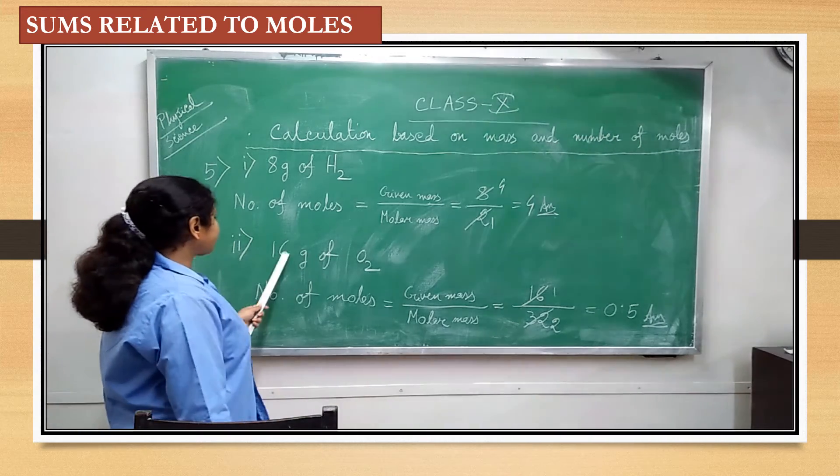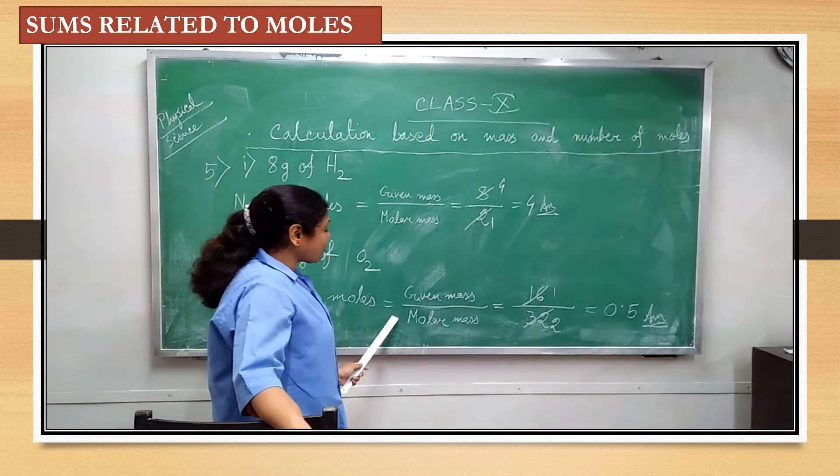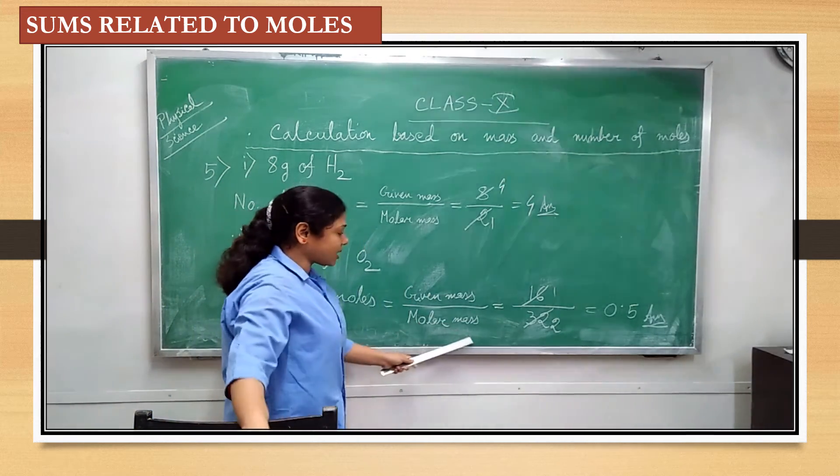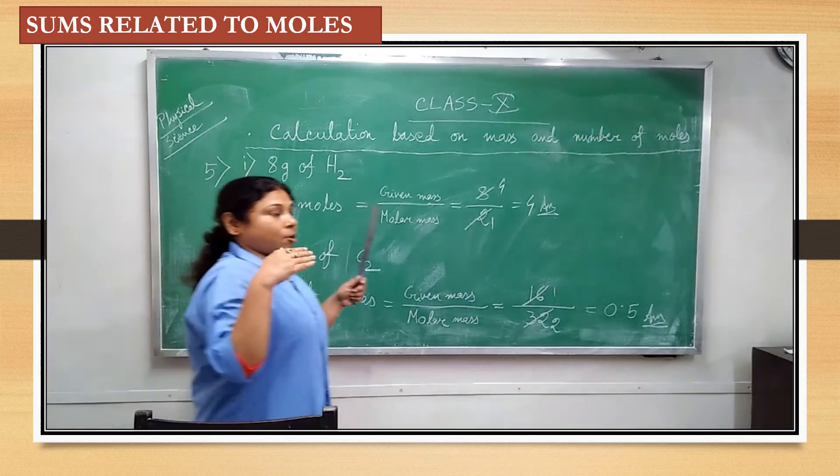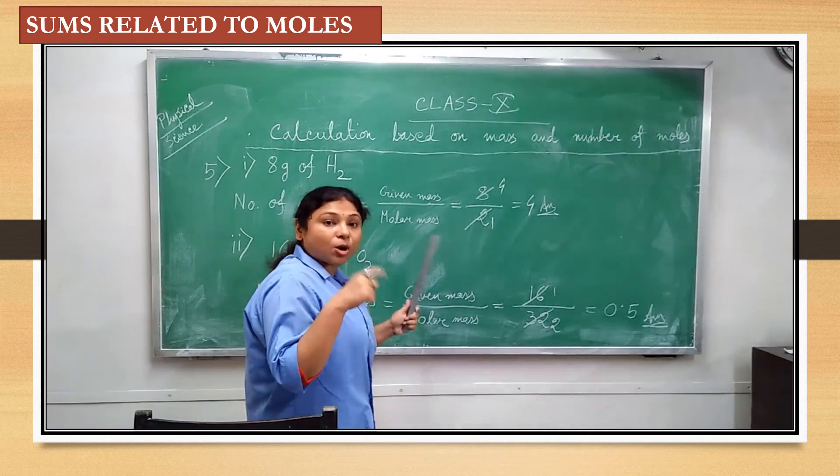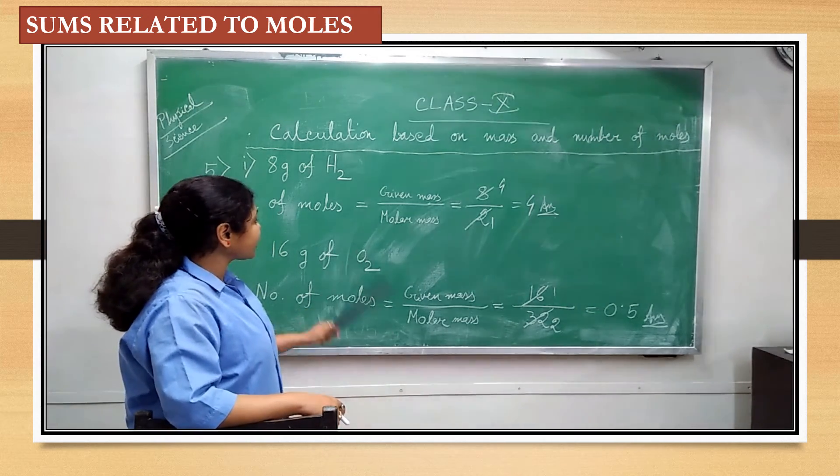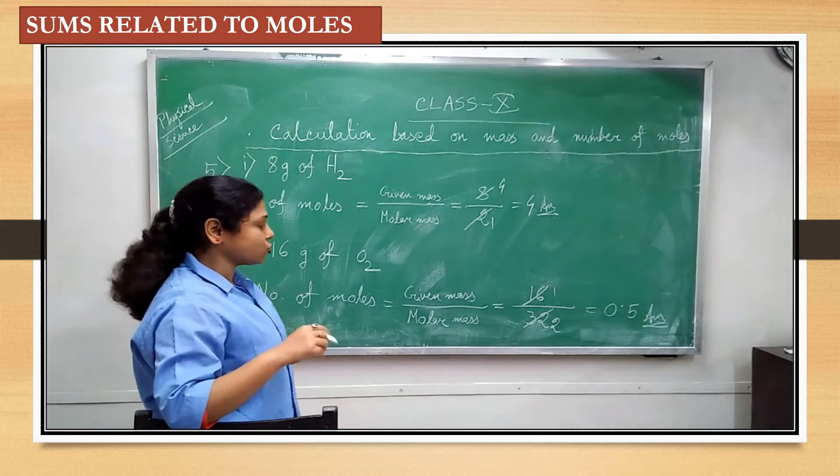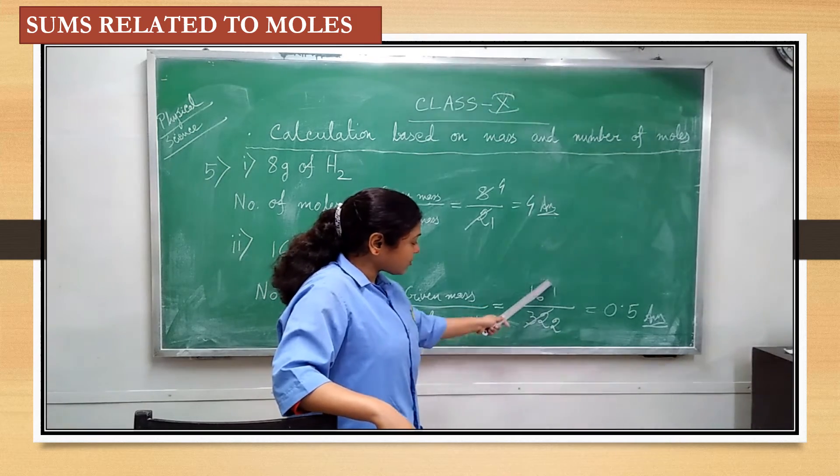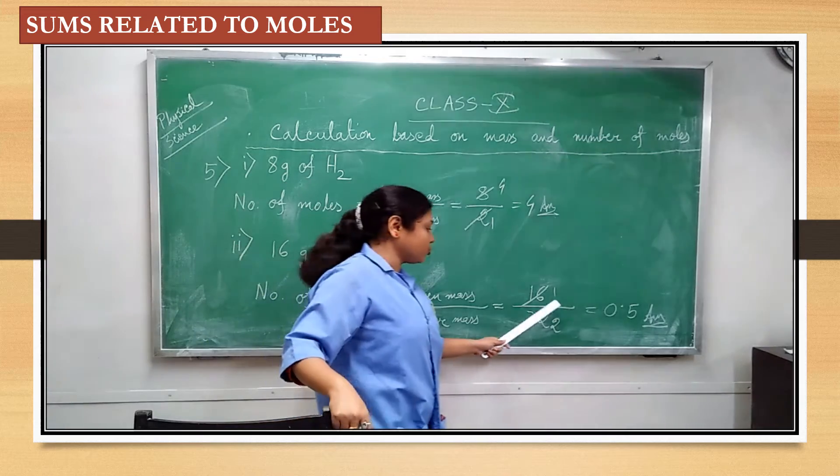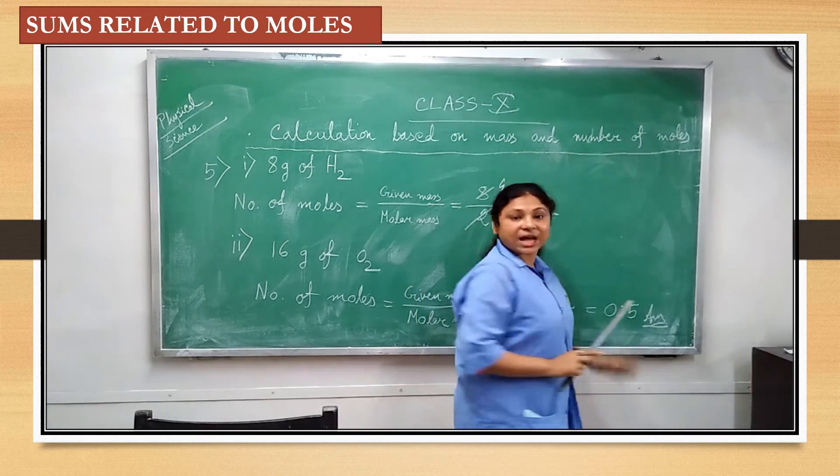Now, the next sum is 60 gram of oxygen. Here, also the number of moles you have to find out. So, number of moles is equal to given mass by molar mass. So, given mass is 60. And, molar mass or molecular mass. Is equal to, in case of oxygen, 16 into 2, that is 32. 16 into 2, that is 32. So, we are writing 32. So, 60 by 32. After reducing, it's 1.2. Because 16 and 16 is 32. So, after calculation, we put down 0.5. So, 0.5 is the answer.